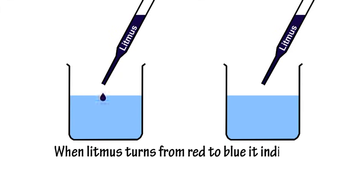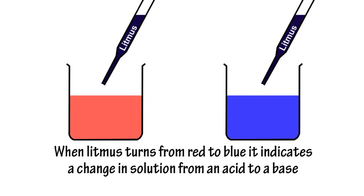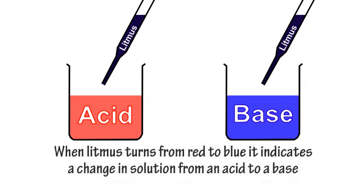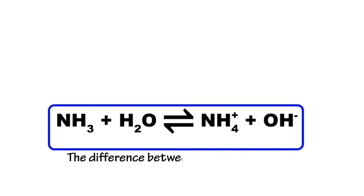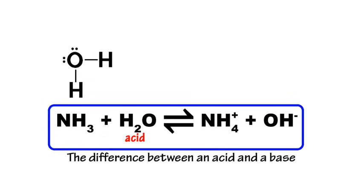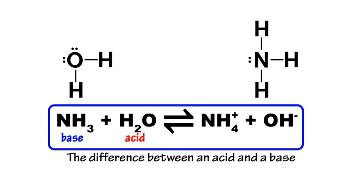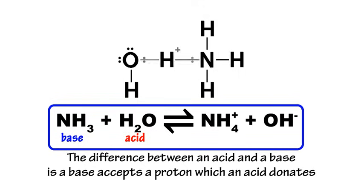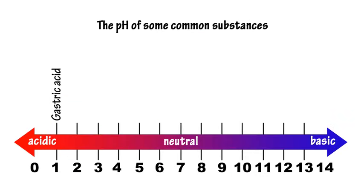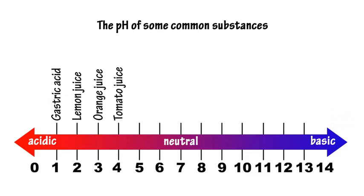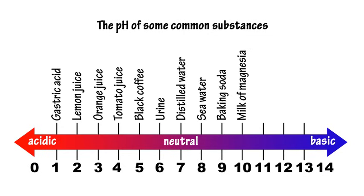When litmus turns from red to blue, it indicates a change in solution from an acid to a base. In chemistry, the difference between an acid and a base is that a base accepts a proton which an acid donates. The pH scale lets you see the level of acidity.